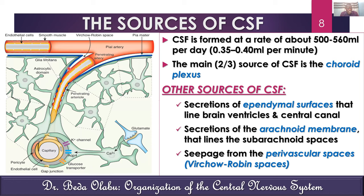Even though the Virchow-Robin spaces exist, the blood vessels entering through them are tightly covered, importantly by the foot processes of astrocytes, which contribute to what we call the blood-brain barrier — a barrier between the bloodstream and the brain tissue.